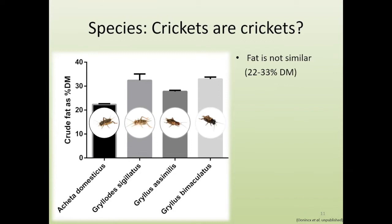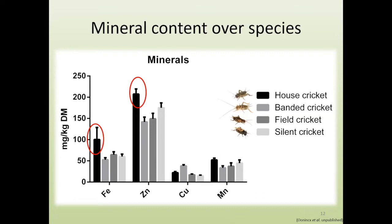Looking at mineral content, there are also large differences. The iron and zinc content of house crickets is far higher than for the other three species. For copper, banded crickets actually have a higher content. Manganese is slightly higher in some but not as extreme as iron and zinc. So the mineral accumulation patterns also differ between cricket species.